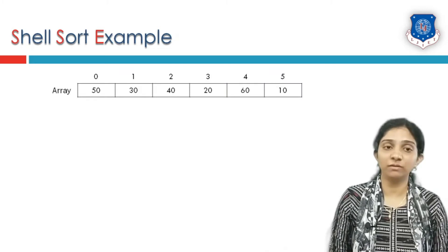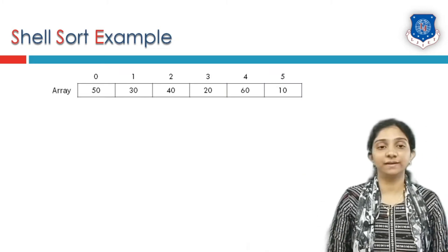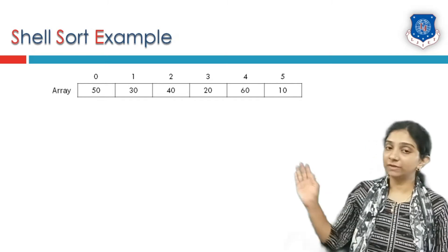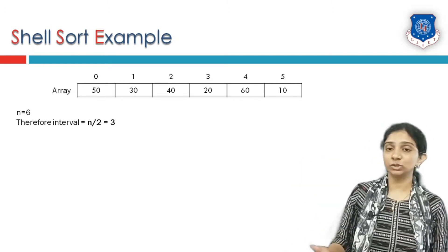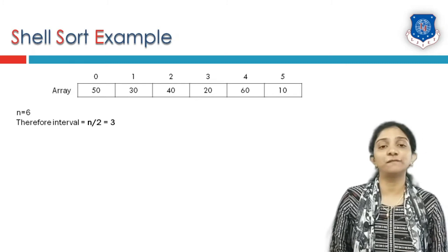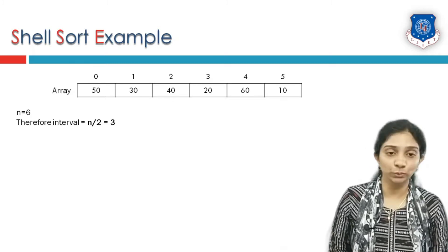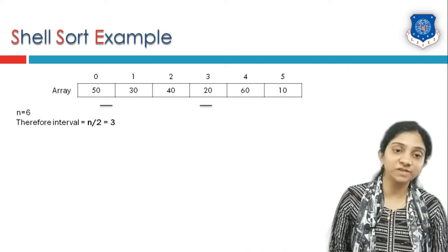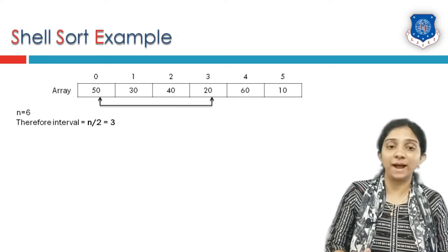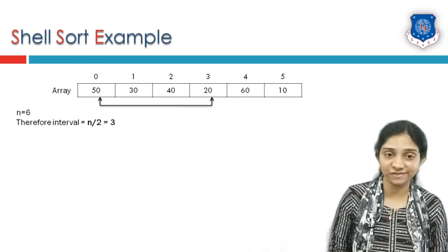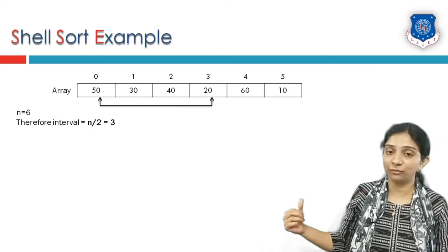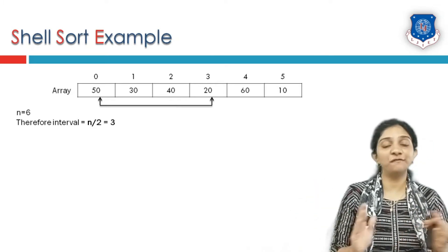Let us start with an example of shell sort. Consider an array of 6 elements ranging from index 0 to index 5 with a given set of elements. There are 6 elements in total, so n equals 6. The initial interval of shell sort is n/2, so here that will be 6/2 which equals 3. We will consider elements that are 3 positions apart as part of one sub-list. So elements at index 0 and index 3 belong to the very first sub-list.